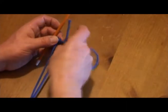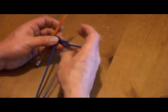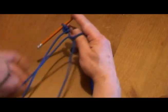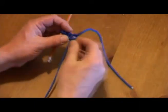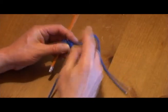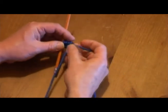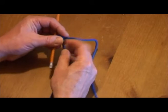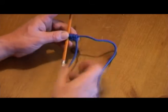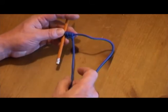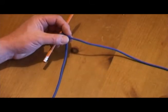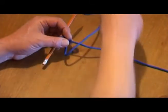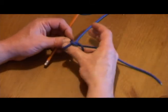Now pointing up, so we'll start the next half hitch by going round the back. You should be able to see by now the pattern that's emerging. And we'll continue tying these half hitches until we get the length we desire.